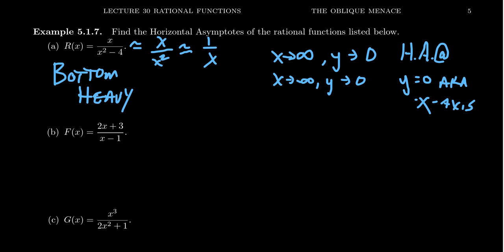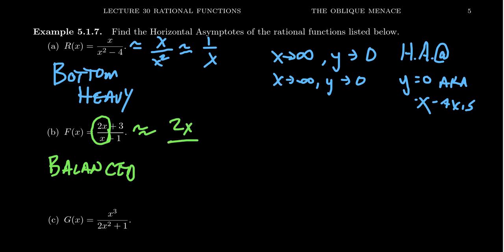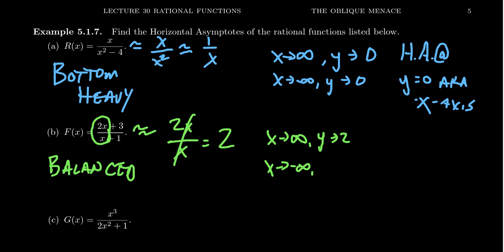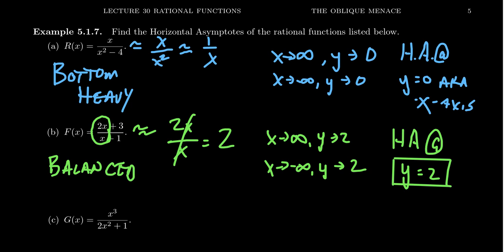Let's look at another example: f of x equals 2x plus 3 over x minus 1. This is an example of a balanced rational function — the leading terms on top and bottom have the same degree. Looking at just the leading terms, this will look like 2x over x, which simplifies to 2. So this is our horizontal asymptote. As x approaches infinity, y will approach 2, and as x approaches negative infinity, y will approach 2 again. Therefore, this function has a horizontal asymptote at the line y equals 2. It's y equals 2 — the equation of a horizontal line.